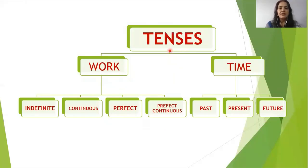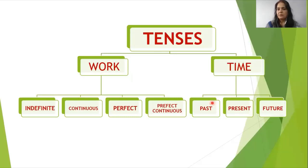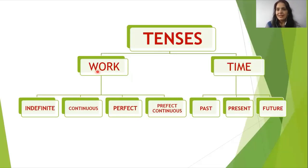We can divide tense into two dimensions: work and time. In life generally, time is divided into three parts — past, present, and future. If we are talking about the state of work, we can divide it into four parts: indefinite, continuous, perfect, and perfect continuous.